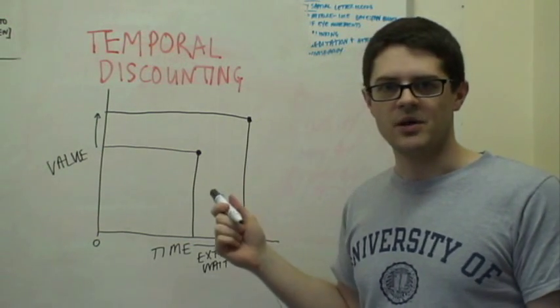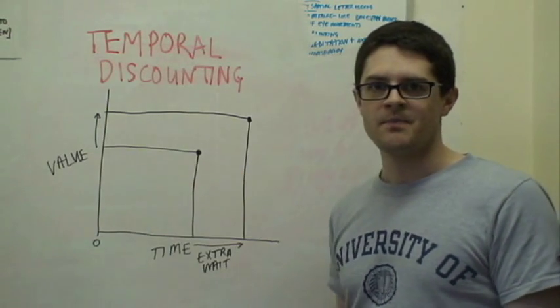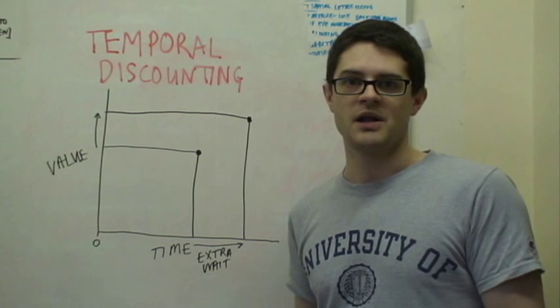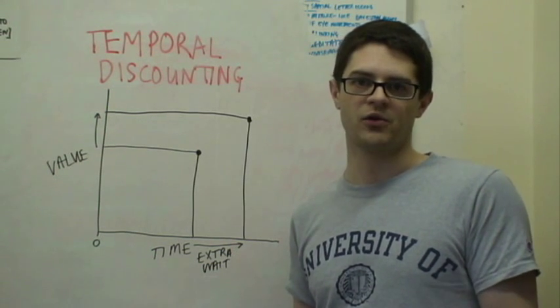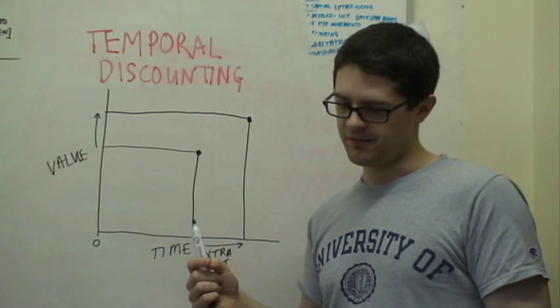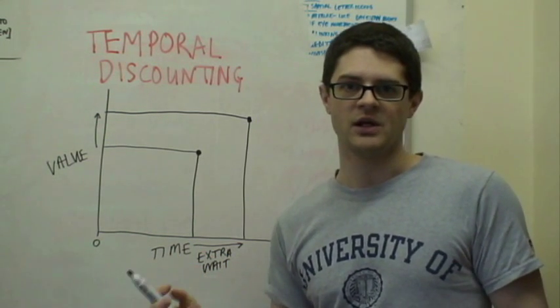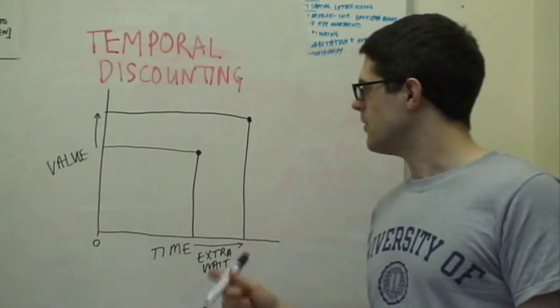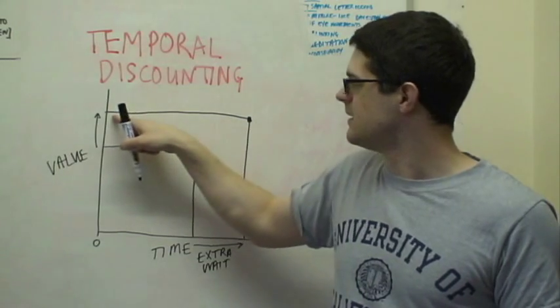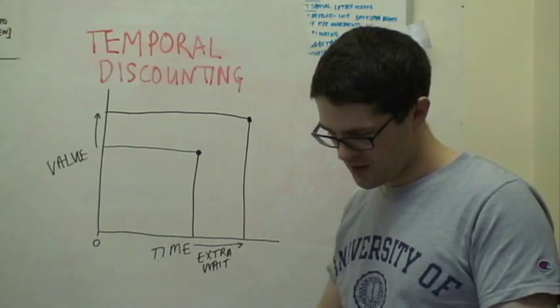It's also a bit weird because the value of something does change over time. If I was stuck in a desert and I was really thirsty, the value of a bottle of water right now is very, very high. But the value of a bottle of water tomorrow is going to be very, very low, because I might be dead by tomorrow. So, the idea that the value is constant and doesn't change over time is a bit iffy.